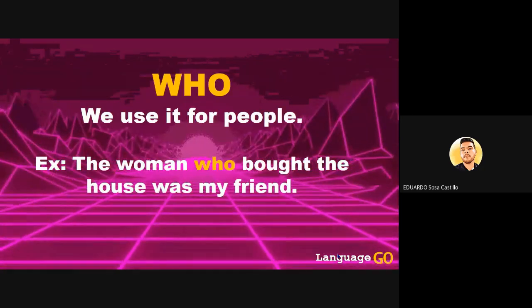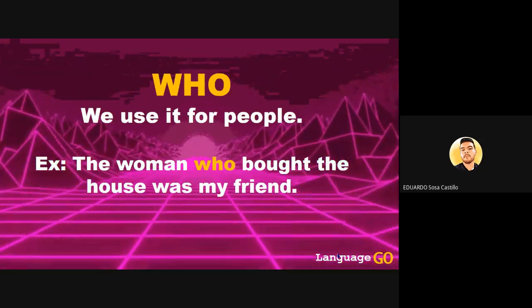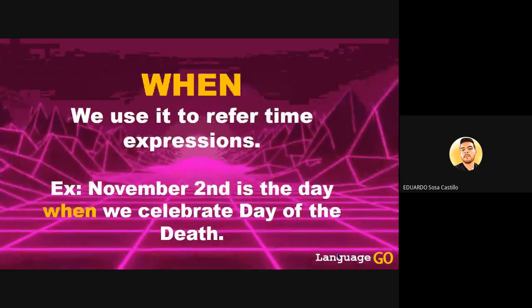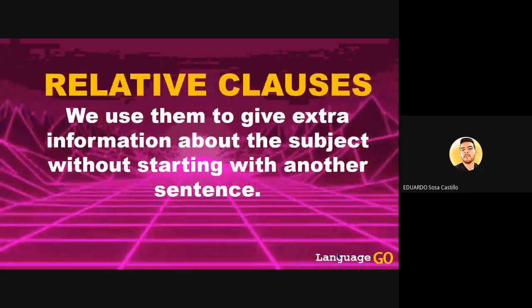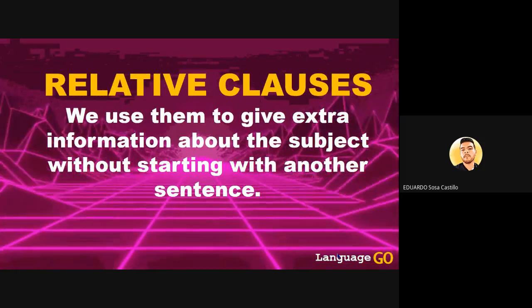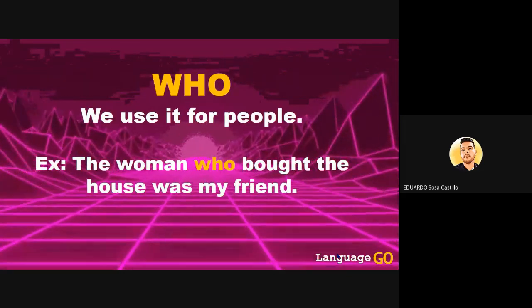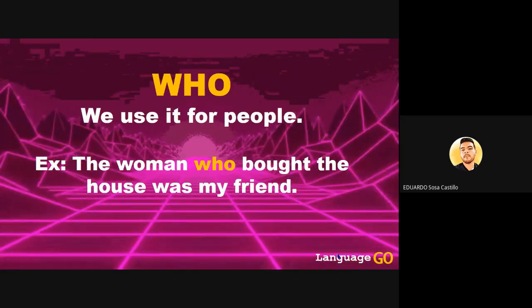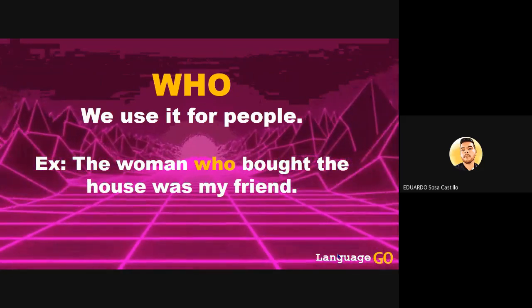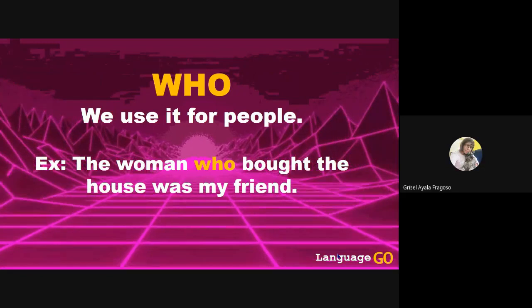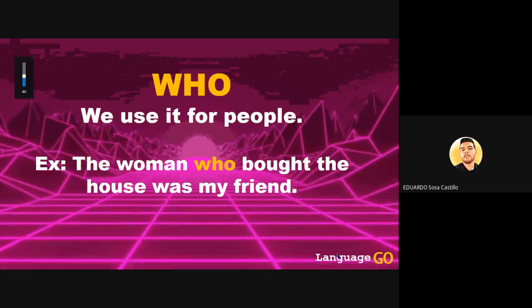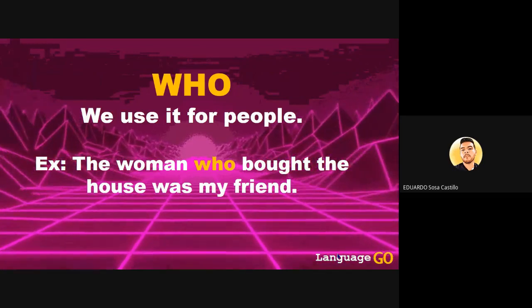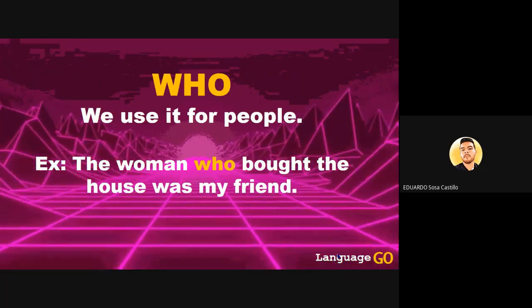We were checking first the relative clause 'who,' which we use for people. In the sentence, the subject is 'the woman.' What did she do? She bought the house. So we are giving more information about a subject. Now let's go to the next one.